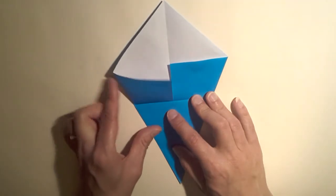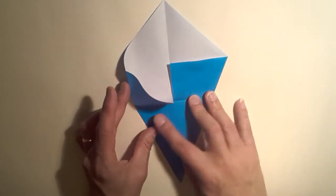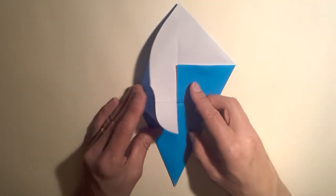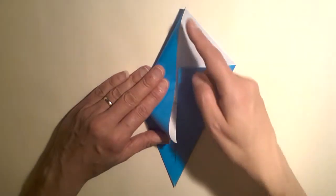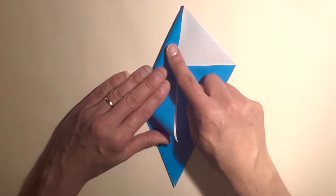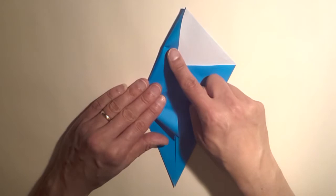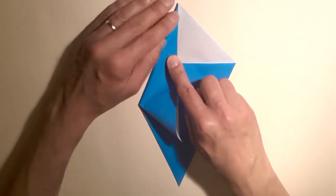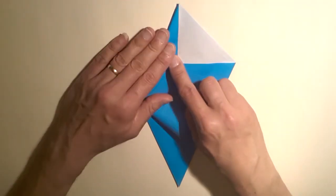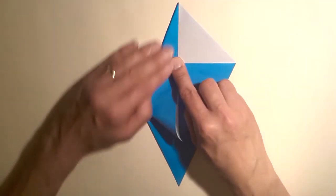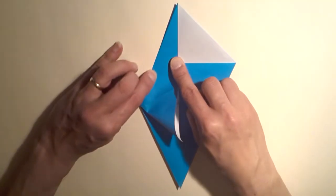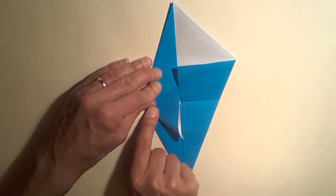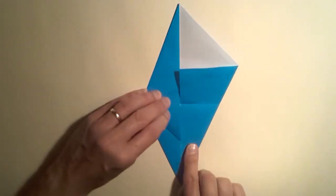So begin by pushing in this side here. We've got this valley fold here as this moves across. We then align this edge along our vertical crease. Once we're happy with a nice sharp point at the top here, press down more firmly on our crease all the way down to this point here. Then follow through on this crease down to this point here.